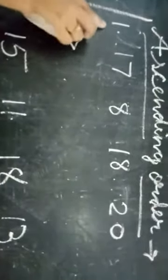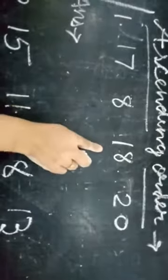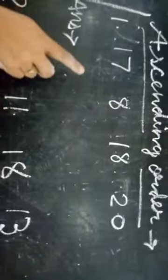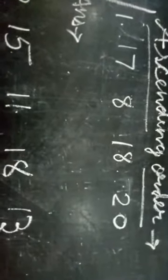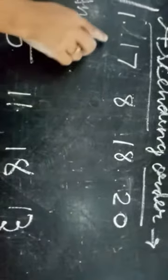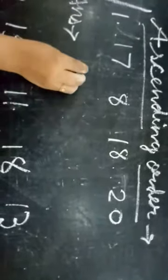Ascending order. So students, first number is 17, then 8, then 18, then 20. Now how we are writing the ascending means, ascending means smallest to biggest. So look here which is the smallest number. First smallest number is 8. So we are writing here 8.